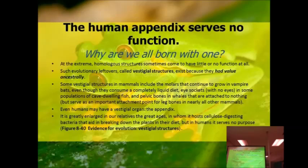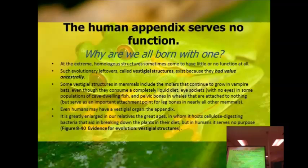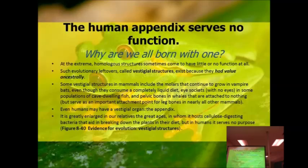Imagine you're a vampire bat — the only thing you eat is a liquefied diet. Why would you have molars to crunch and chew food even though you eat a completely liquid diet? Or if you've ever seen cave-dwelling fish, they're often albino white with eye sockets but no eyes. If you live your entire life in the dark, forming eyes just takes extra energy from your system. So they've got eye sockets but no eyes in those sockets. If you look at a whale, like a killer whale, they actually have pelvic bones where they would have had legs attached, but they don't have legs. This points to a common ancestor back hundreds of thousands or millions of years ago.